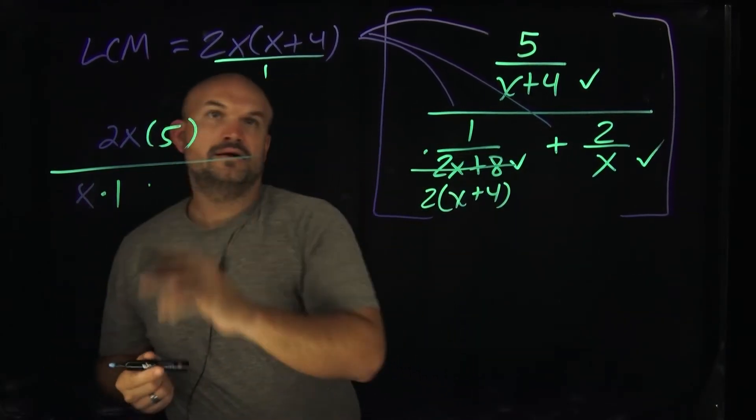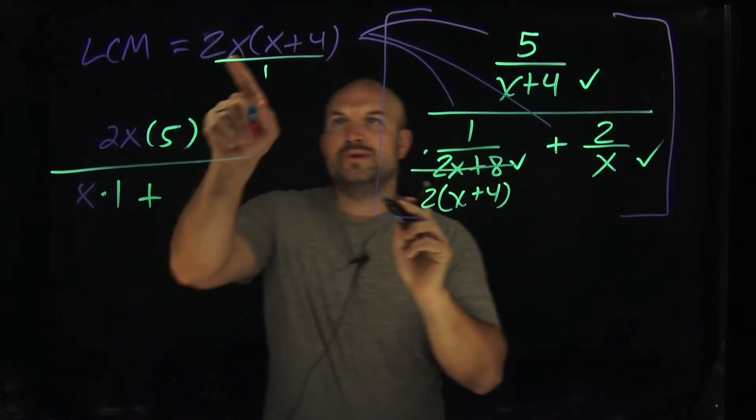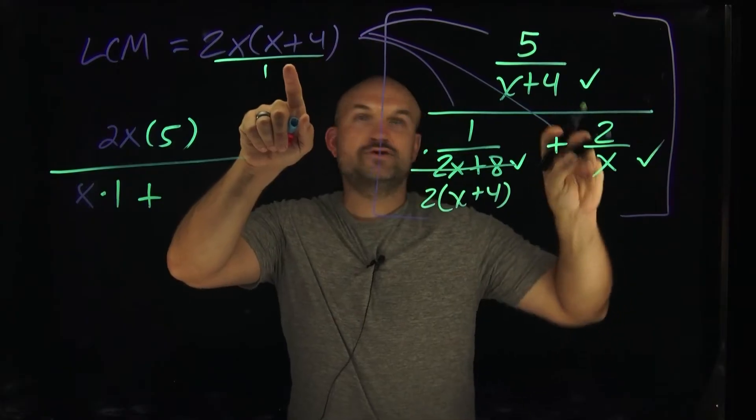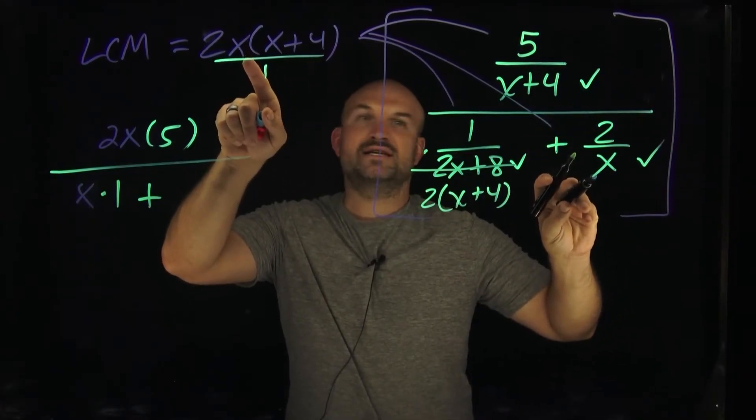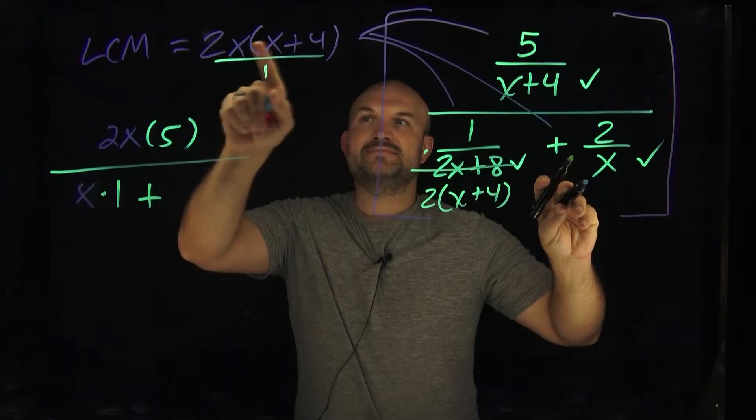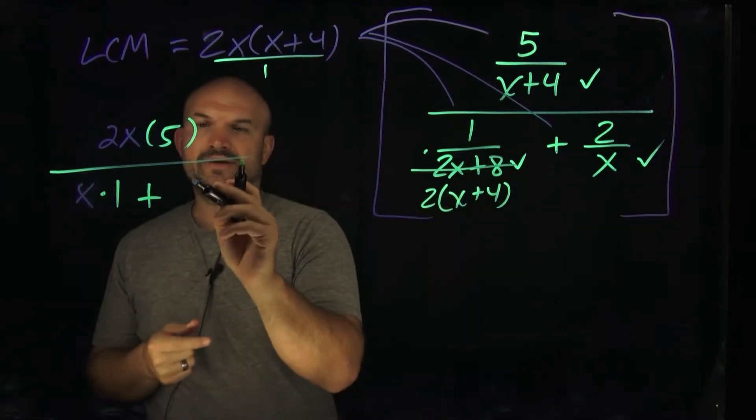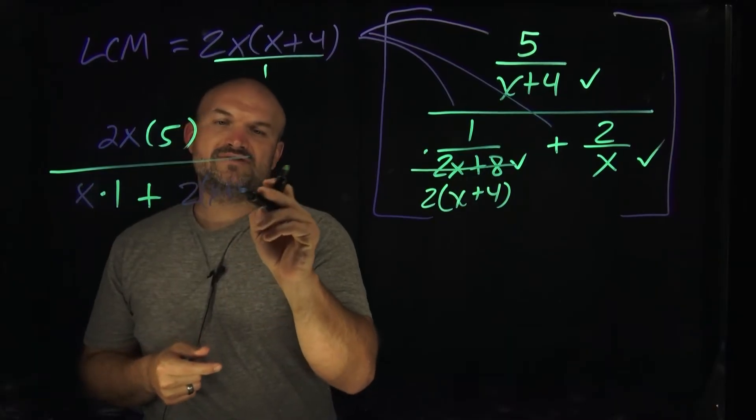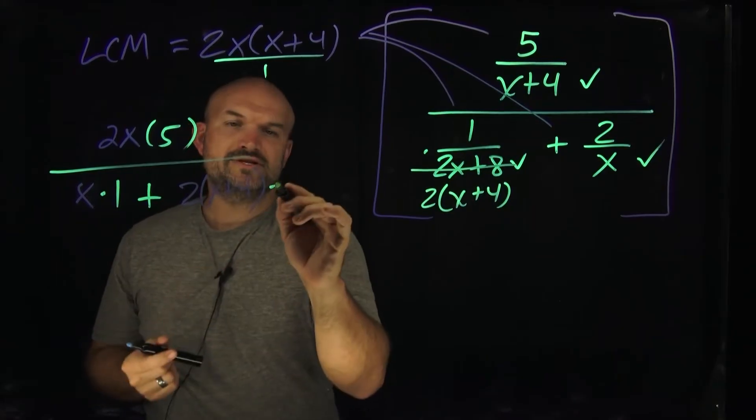And then over here, we're going to have 2x times x plus 4 times 2 over x. Well, here, the x's are going to divide out. And that's just going to leave me with 2 times x plus 4 times 2. So that will be 2 times x plus 4 and then times 2.